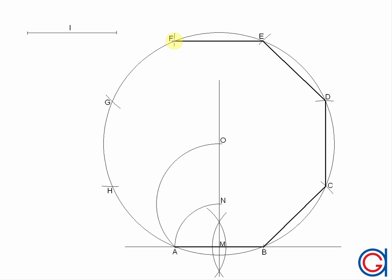Vertex F to G, G to H, and finally we will close our octagon by joining H to A.